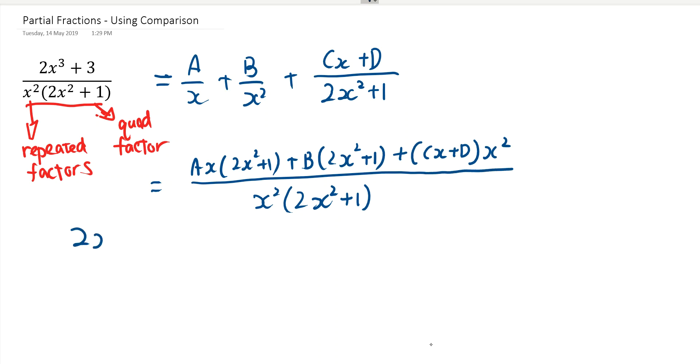So this means that 2x cubed plus 3 equals to a times x bracket 2x squared plus 1, plus b bracket 2x squared plus 1, plus cx plus d times x squared.